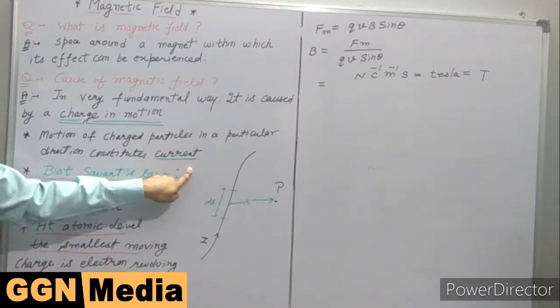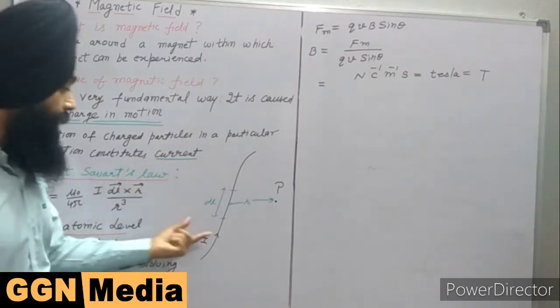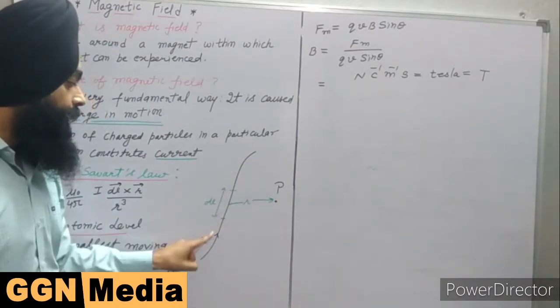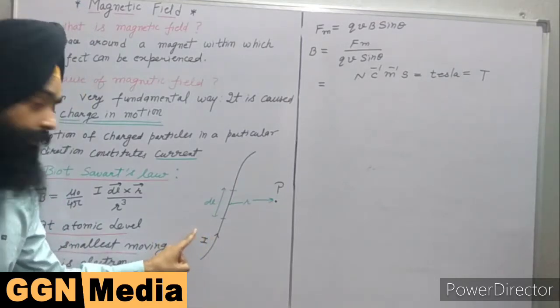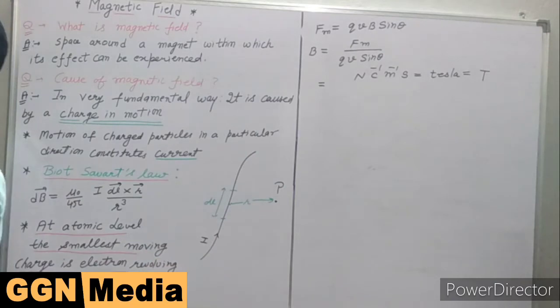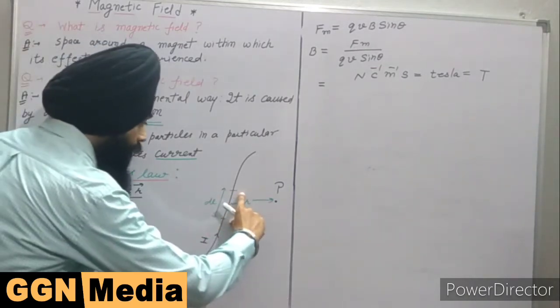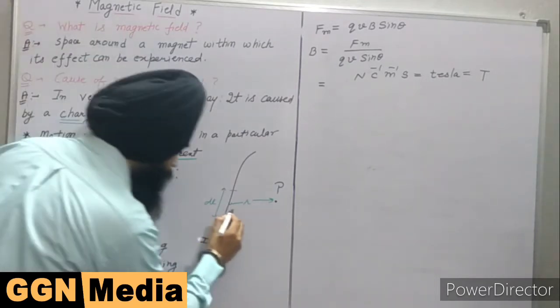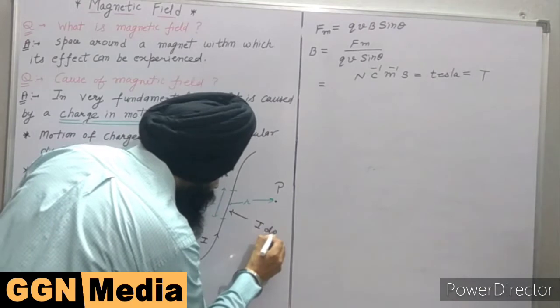Whenever a current is flowing in a wire, let us say that this is a wire and a current I is passing through this wire. Then due to this passage of current, a field is produced around this wire and that field can be measured using Biot-Savart law. Let us take a small portion of this current of length dL, that is called the current element. This current element can be written as I dL.